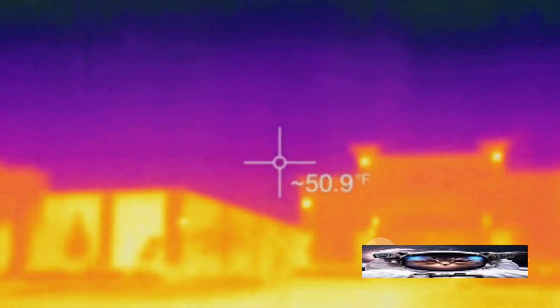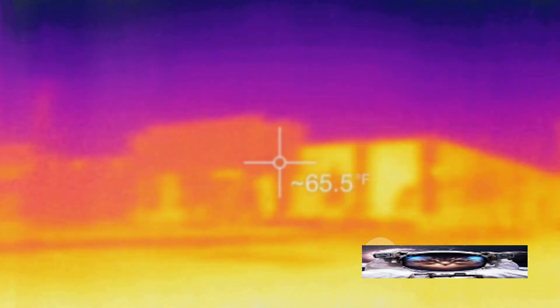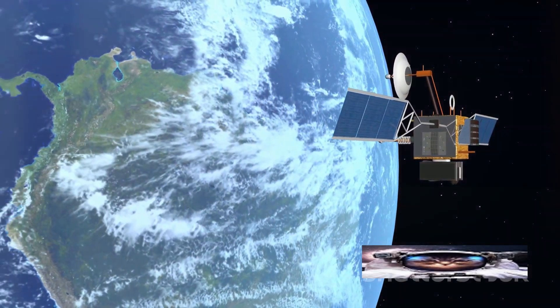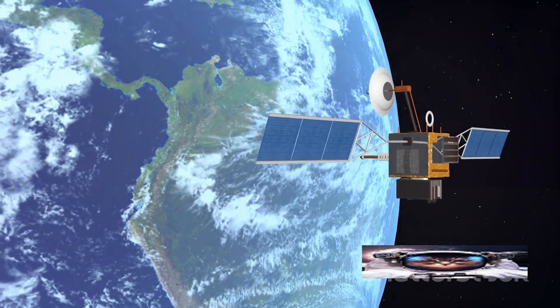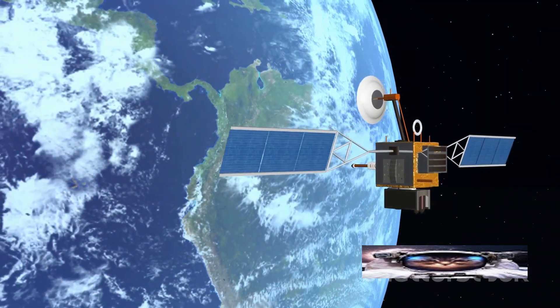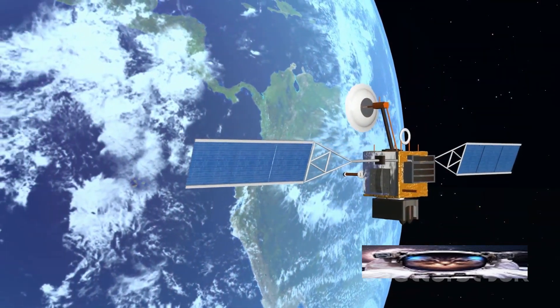Next up, we have multispectral scanners. These devices capture images in multiple wavelengths of light, including those beyond our human capability to see. With these scanners, satellites can track changes in vegetation, soil moisture and even the health of coral reefs.